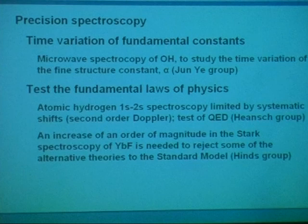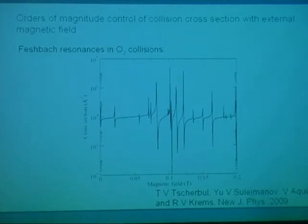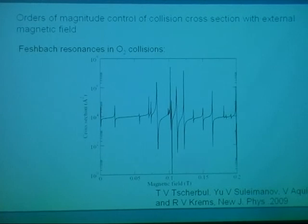The second application which is also very interesting especially for us is chemistry. That's a theory paper published by the group of Roman Krems that shows you a cross-section of O2-O2 collisions at ultra-cold temperatures. These are micro Kelvin collisions. You see collision cross-section as a function of magnetic field. Cross-section can be manipulated by orders of magnitude. Of course, resonances. Every time we pass a resonance, we have enhancement of few orders of magnitude in collision cross-section.